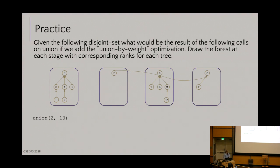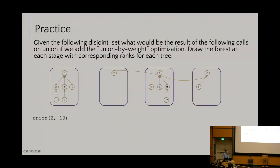We union by updating the overall root of the smaller tree to point directly to the overall root of the larger tree — so node 2 moves over to be a child of 7. What's nice is we have not increased the height of the tree of 7. It had a height of 1 and it stays at height 1. If we had added 7 into 2 instead, we'd have accidentally created a tree with height 2, which is less performant.